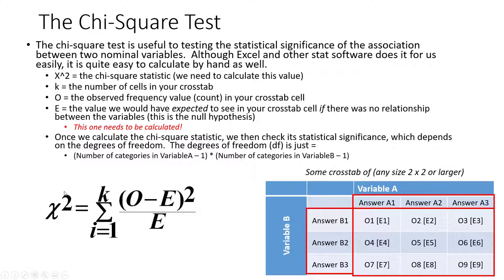We test the chi-square statistic with a certain number of degrees of freedom. Degrees of freedom is simply the number of categories in one variable minus 1, times the number of categories in the other variable minus 1. So we have 3 minus 1, which is 2, times 3 minus 1, which is 2 — giving us degrees of freedom of 4 for this particular example.